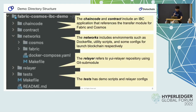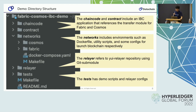Here is a directory structure for the Fabric Cosmos IBC demo. The chaincode and contract directory include an IBC application that references the transfer module for Fabric and Cosmos. The networks directory includes the environment for both chains. The layer directory refers to the YUI relayer. The test directory has scripts and utilities for the scenario.